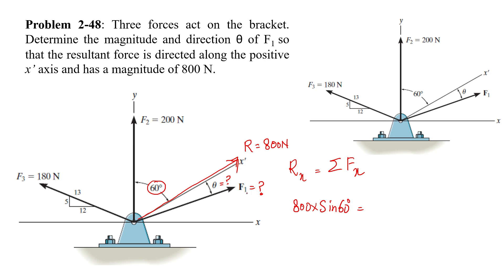The x-component of F1 — since we don't know the magnitude, we will write F1. For the direction, if we measure from the x-axis this will be one direction; if we measure from the y-axis, this will be another. Since we are measuring the angle for the resultant from the y-axis, we will also measure the F1 angle from the y-axis as well. So we will have sine theta, and the angle would actually be theta plus 60 degrees. Since F2 is directed along the positive y-axis, there won't be any x-component of F2.